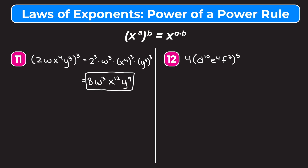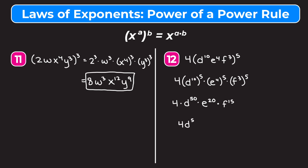Example twelve is 4 times d to the tenth, e to the fourth, f to the third, all raised to the fifth. The 4 is not inside the parentheses being raised to the fifth, so it stays on the outside. d to the tenth raised to the fifth: 10 times 5 is 50, giving d to the fiftieth. e to the fourth raised to the fifth: four times five is twenty, giving e to the twentieth. f to the third raised to the fifth: three times five is fifteen, giving f to the fifteenth. Our answer is 4d to the fiftieth, e to the twentieth, f to the fifteenth.